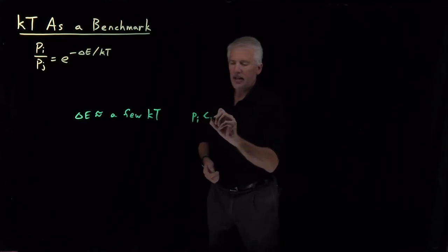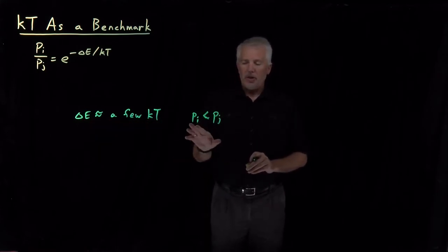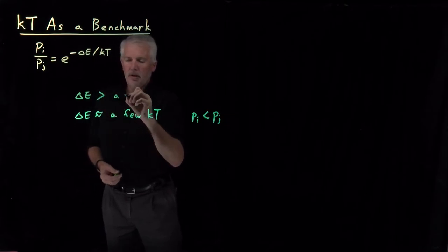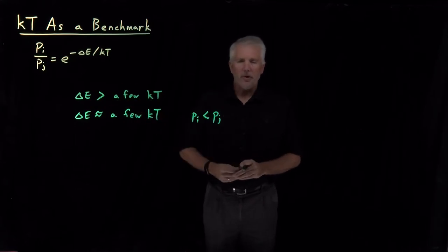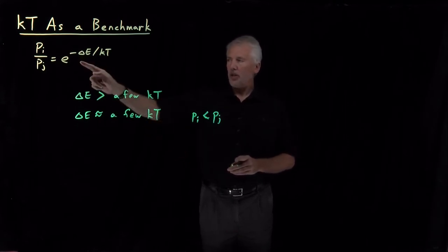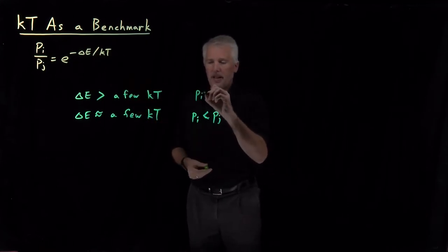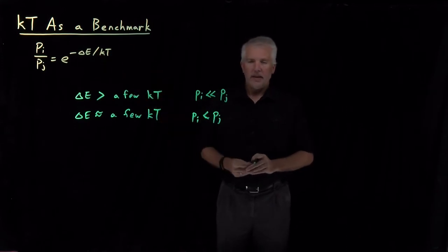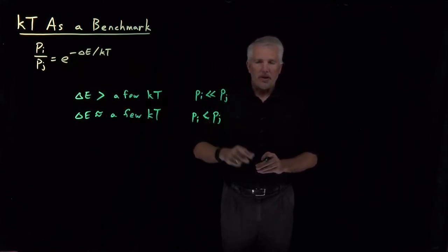The probability of occupying state A is less than the probability of occupying state B because its energy is higher, but not so small that we can ignore state I. On the other hand, if the difference in energy is large — more than just a few kT, maybe even 10 kT — then that ratio ΔE divided by kT is 10, and e to the minus 10 is all of a sudden a pretty small number. The probability of being in state I is quite a bit smaller than the probability of being in state J, often small enough that we can completely ignore it.